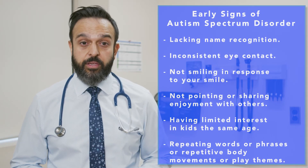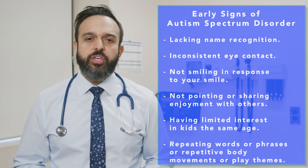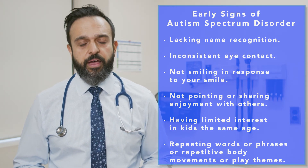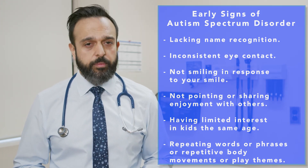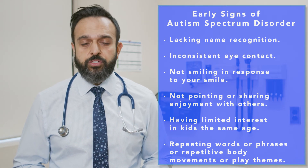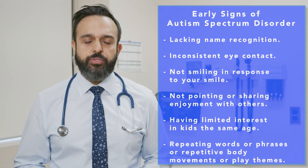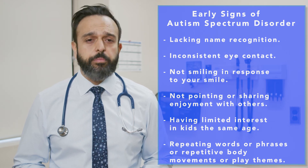What are early signs of Autism Spectrum Disorder in young children? This can include any of the following: not responding to their name being called, having inconsistent eye contact, not smiling in response to your smile, not pointing or sharing enjoyment with others, having limited interest in other kids the same age, repeating words or phrases, or repetitive body movements or play themes.